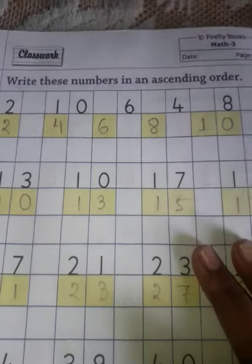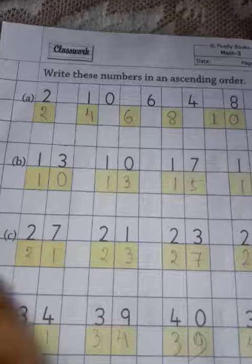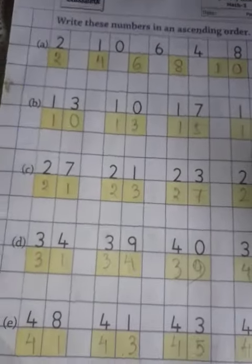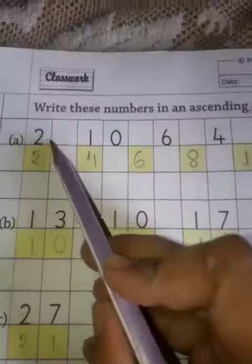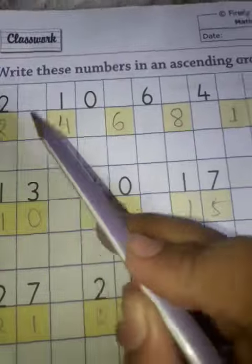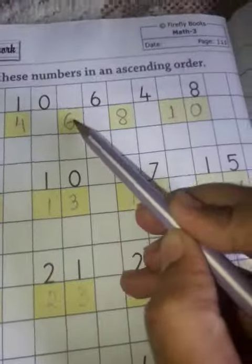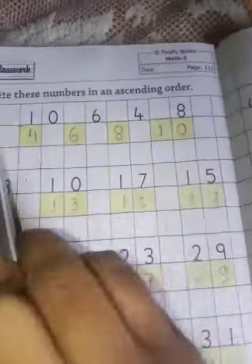Then, write these numbers in ascending order. We know ascending order means smallest to biggest. So first: 2, 10, 6, 4, 8. First we have to write the smallest number: 2, then 4, then 6, then 8, then 10. 10 is the biggest number, small to big.